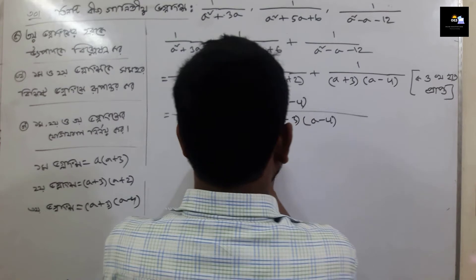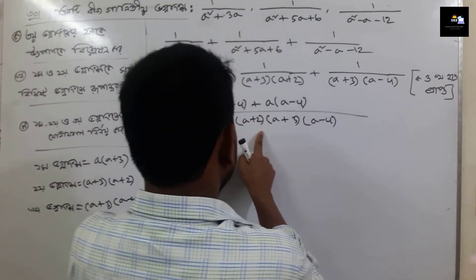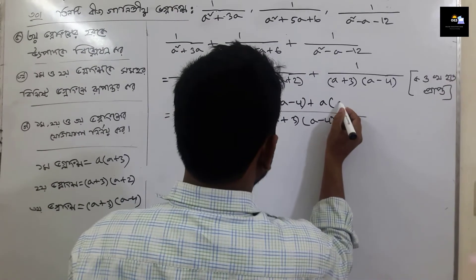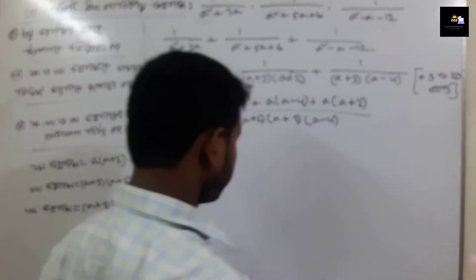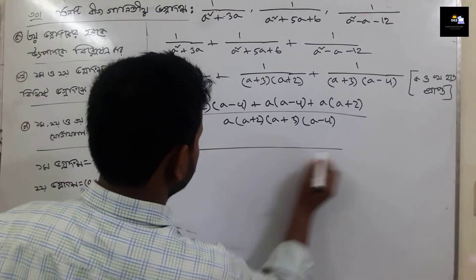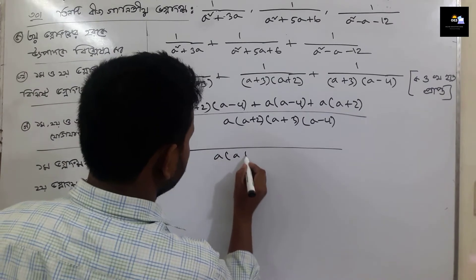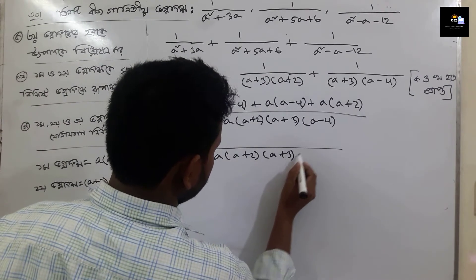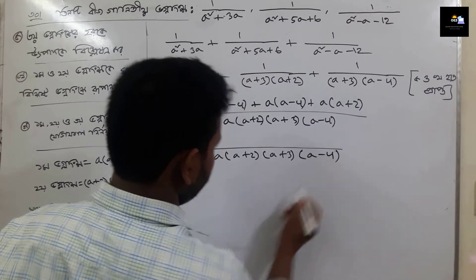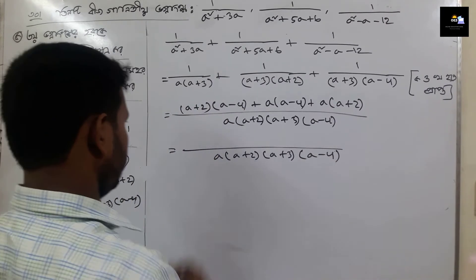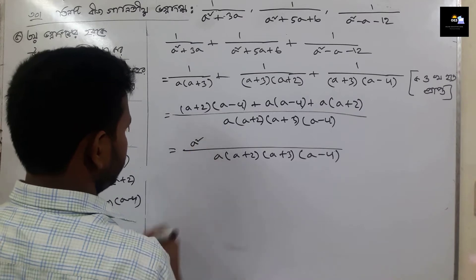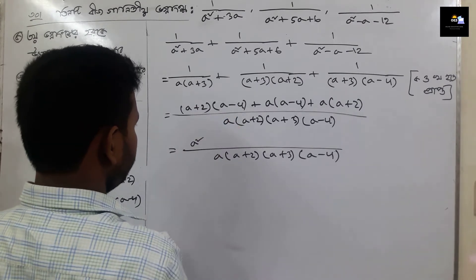A minus 4 is an accurate entity. A into a plus 2. Plus a into a plus 2. So now close. A into a plus 2 into a plus 3 into a minus 4. The next step: a equals to A.